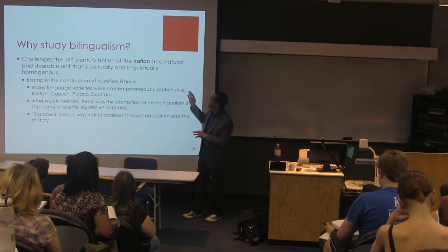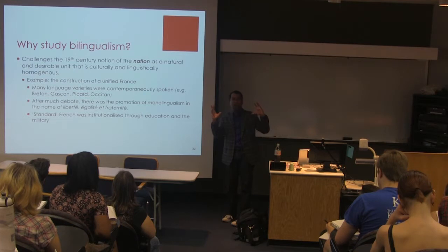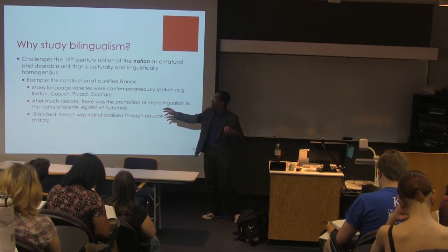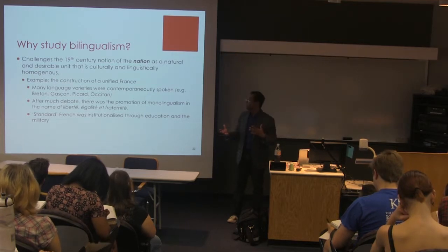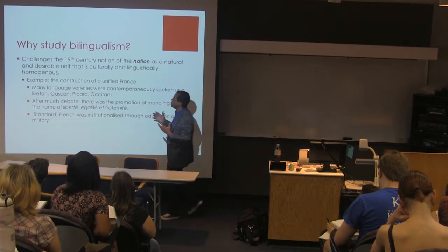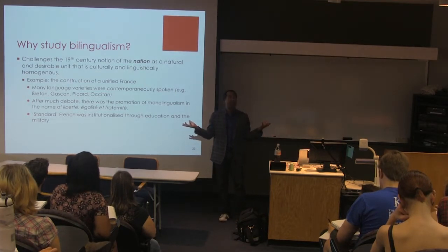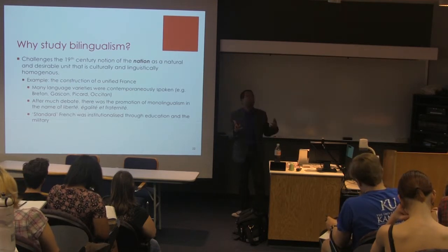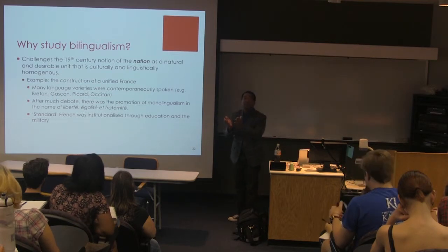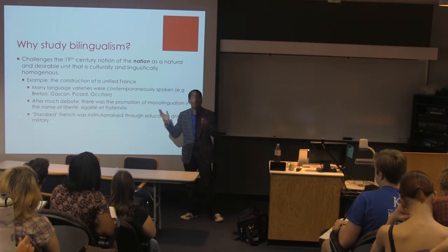There are many varieties spoken all over this nation-state called France, and they're still spoken today. However, after much debate, there was a promotion of having one common language to unite everyone — from Breton to Gascon to Occitan to Alsace — under the identity of being French. The motto is liberté, égalité, et fraternité — liberty, equality, and brotherhood. Standard French, something closer to the Parisian standard, was institutionalized and taught through the education system, promoted by the military, to get all these different varieties to band under one common identity.